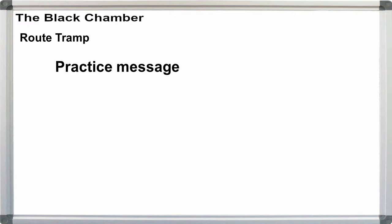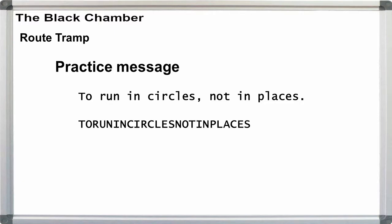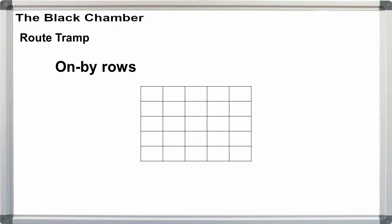To illustrate each route, I'll use the message to run in circles, not in places. First, remove the spaces and punctuation and make the text uppercase. This is 25 letters long, so we need to use a 5 by 5 square. Our first route will be on by rows.